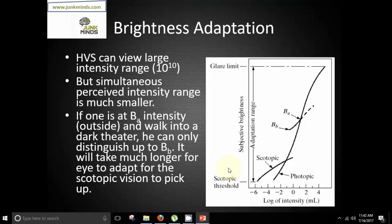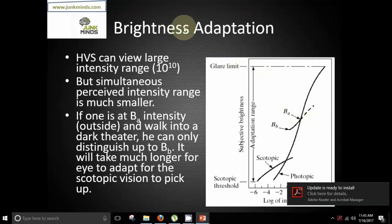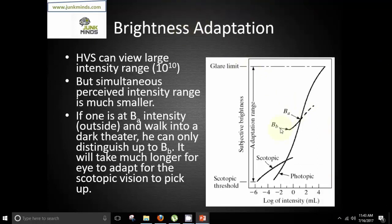Now talking about brightness adaptation. The human visual system can view a large intensity range which is mainly of the range 10 raised to 10, but simultaneous perceived intensity range is much smaller. Here you can see in the graph we have log of intensity versus subjective brightness ranging from scotopic threshold to glare limit. Now from the graph we can see that if a person is at point BPA which is an intensity outside the theater and when the same person walks into a dark theater he can only distinguish up to this point BP, and it will take much longer for the eye to adapt for the scotopic vision to pick up.